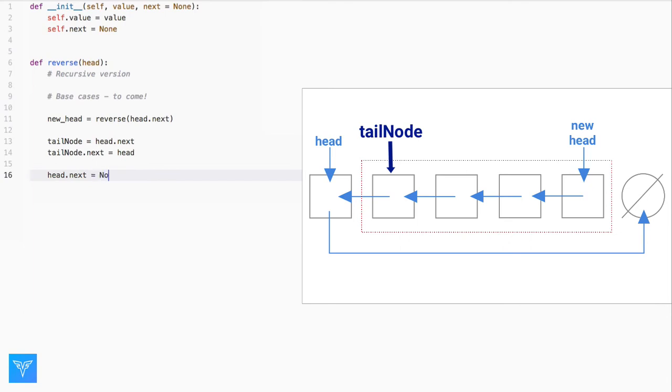We can eliminate the reference to tailNode because tailNode is just the node head.next points to. tailNode.next is the same as the more cryptic looking head.next.next.